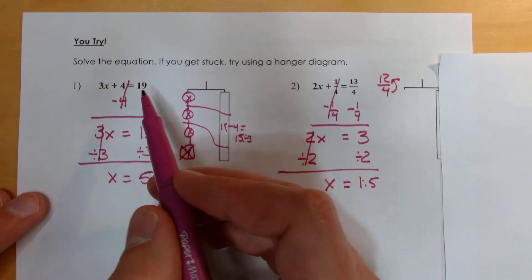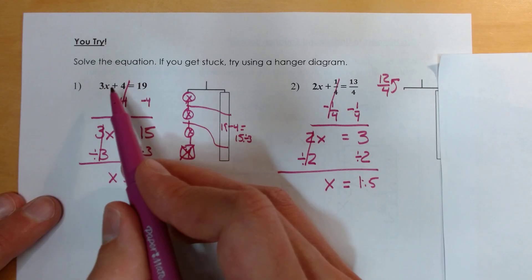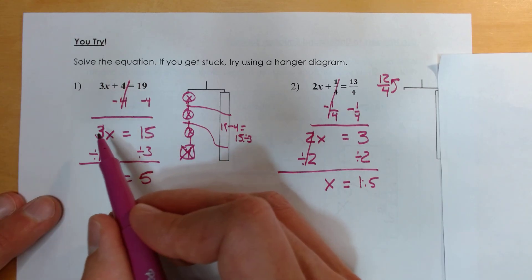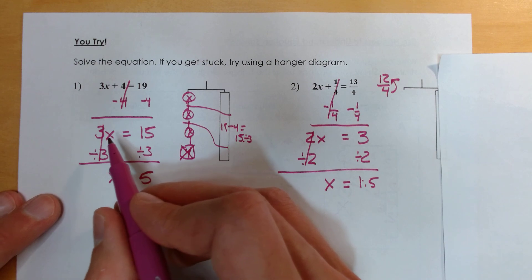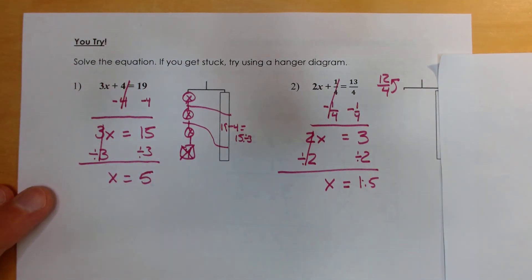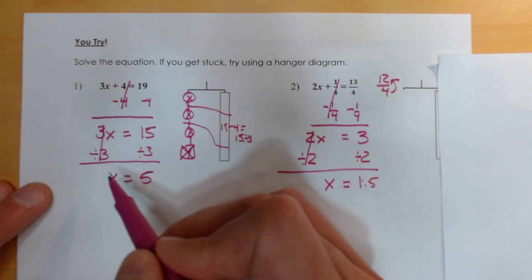So again, for our steps here, what we used our hanger diagrams to see is, first thing we're going to do is subtract away the number that's being added. And then we're going to use a little division here to figure out how many equal groups we have to figure out what 1x would equal. In math, we call this inverse operation. We do the opposite of what we see to figure out what one of our variables equals.